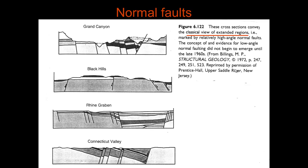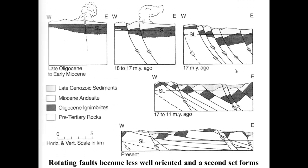Now let's talk more about the geometry of normal faults. Classic views show them as very steep — the Andersonian steep orientation — usually in arrays. Those dipping in the same direction are called synthetic, and those dipping in the opposite direction are called antithetic, but all are high-angle.